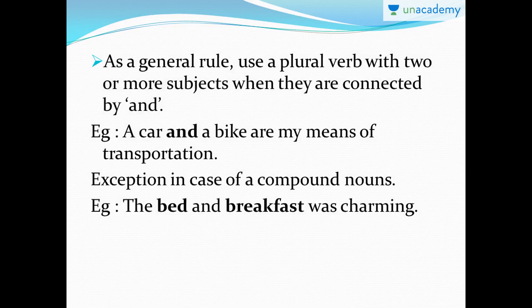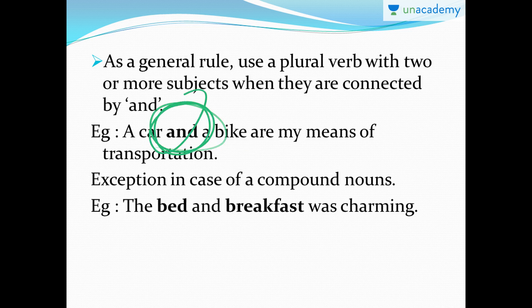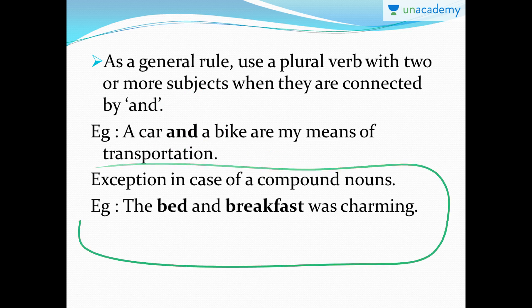As a general rule, use a plural verb with two or more subjects when they are connected by the word 'and.' So when you have two or more subjects connected by 'and,' the verb will be plural in nature. For example: 'A car and a bike are my means of transportation.' So we have two singular subjects connected by 'and,' so obviously the verb takes plural form. However, in English grammar we have exceptions all the time. The exception is in the case of compound nouns.